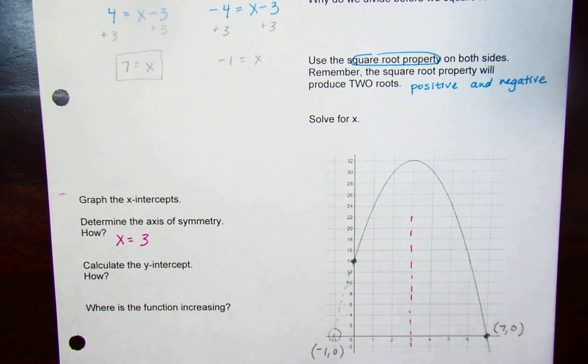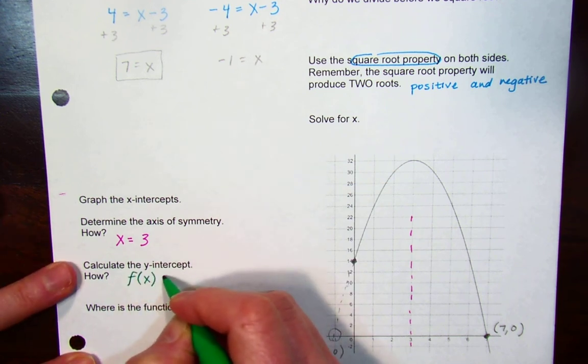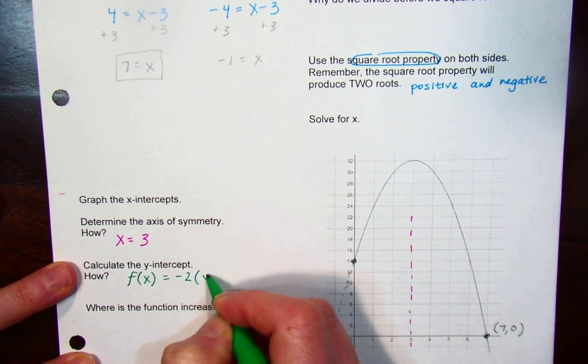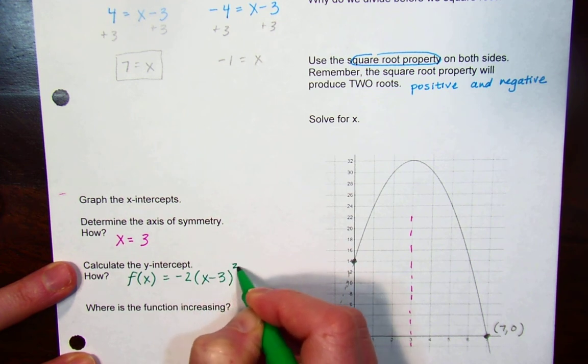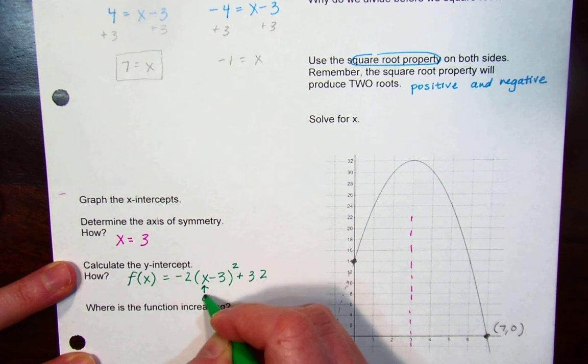And then calculate the y-intercept. Well, every time I want to find the y-intercept, I take my function f(x) = -2(x - 3)² + 32 and substitute 0 in for x.